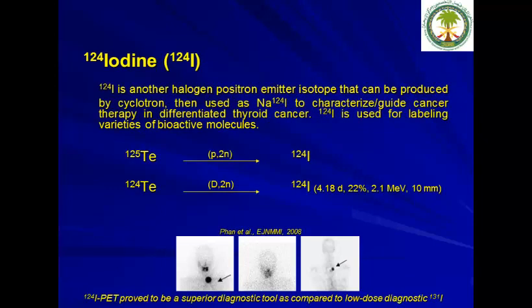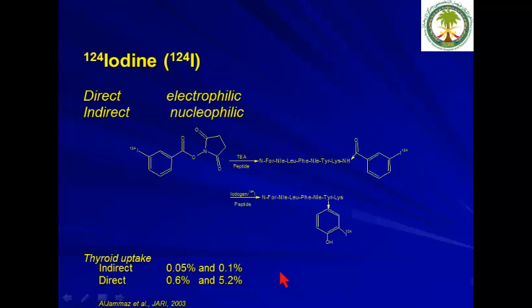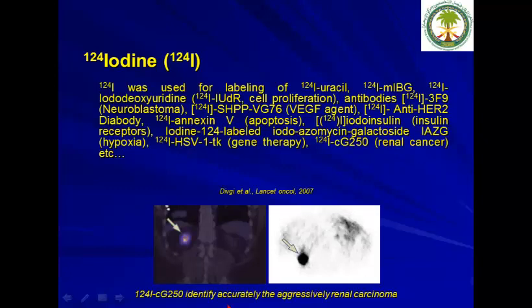There is great interest in iodine-124, especially for thyroid imaging. Production of iodine-124 can be done in two ways: one using deuterons, the other using protons. Iodine-124 has proved to be a superior diagnostic tool compared to low-dose diagnostic iodine-131 or iodine-123. It can be radiolabelled using direct and indirect methods; indirect methods are more time-consuming but result in no thyroid uptake after 24 hours. Iodine-124 has also been used to radiolabel compounds such as MIBG and antibodies like cG250, which is used to identify aggressive renal carcinoma.